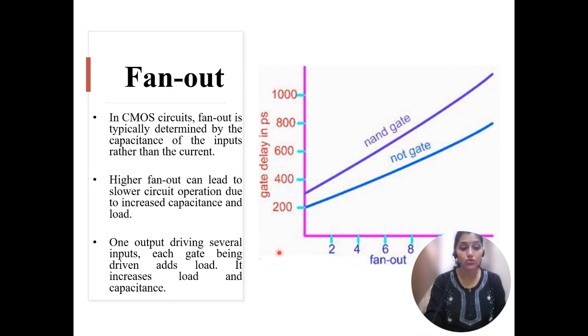Higher fan-out can lead to slower circuit operation due to increased capacitance and load. Here in this diagram, you can see when fan-out increases, gate delay also increases. One output driving several inputs, each gate being driven adds load and because of that added load, it increases capacitance and that is why delay also increases.